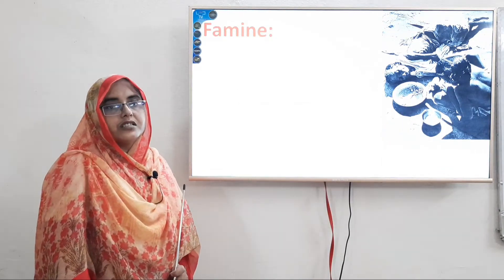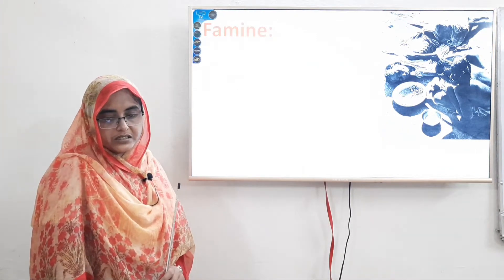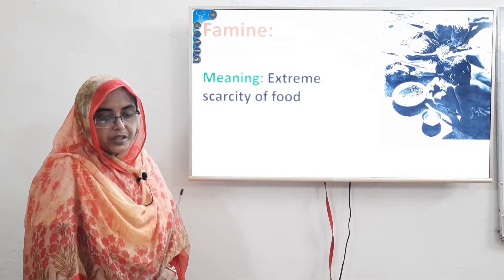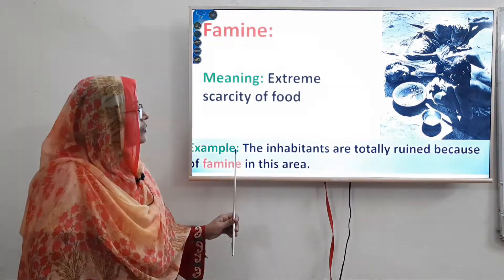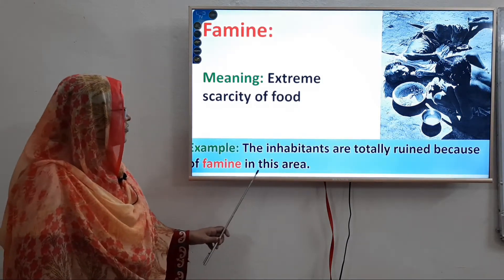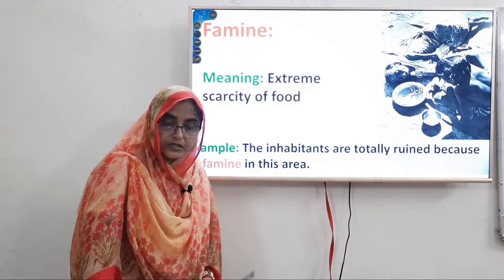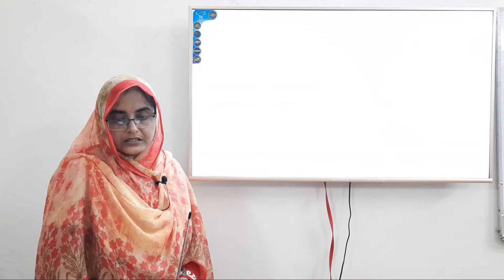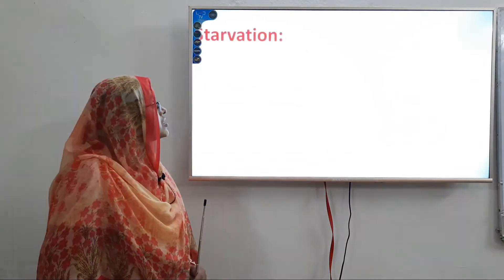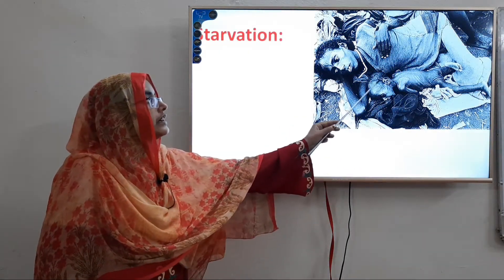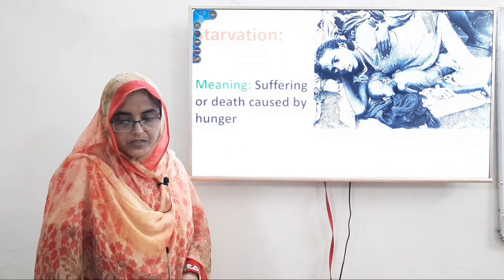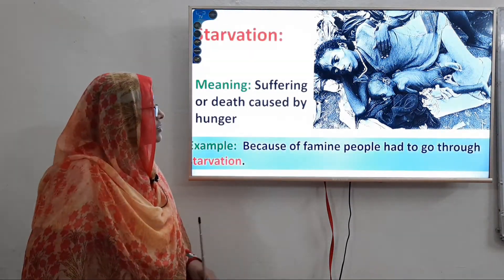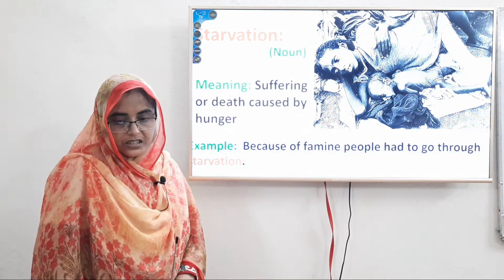Famine — the sorrowful situation of the people of Bangladesh that they faced in 1940. Famine means extreme scarcity of food. Sentence: The inhabitants are totally ruined because of famine in this area. It is also a noun form. And for famine, people have to starve — so the next word is starvation. Starvation means suffering or death caused by hunger. Sentence: Because of famine, people had to go through starvation. It is also a noun form.